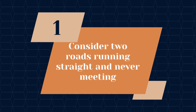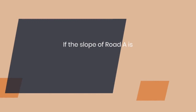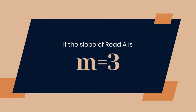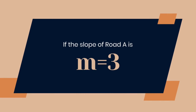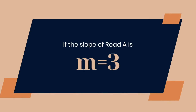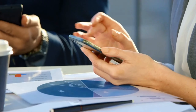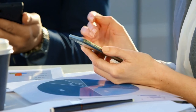Example: Consider two roads running straight and never meeting. If the slope of road A is M = 3, and road B also has a slope of M = 3, then A and B are parallel, ensuring they never intersect.